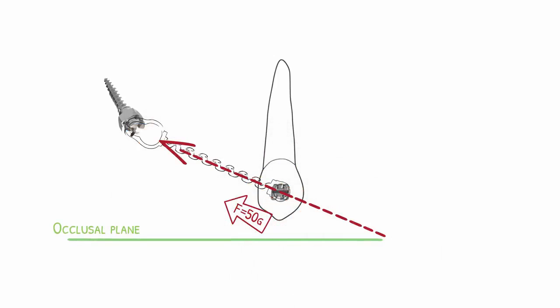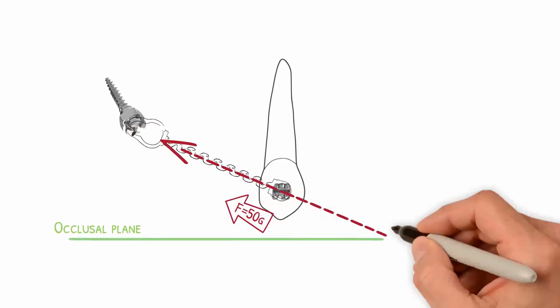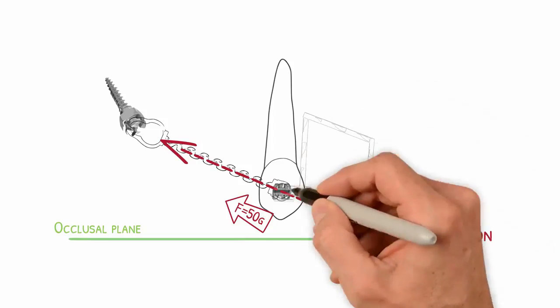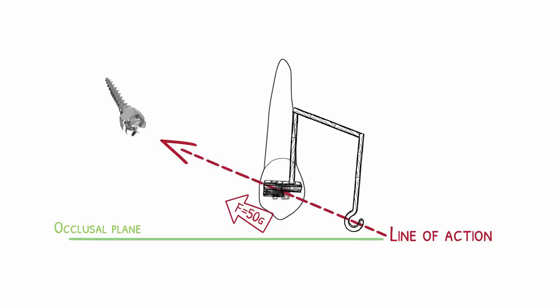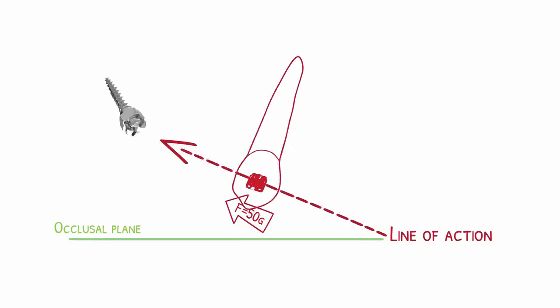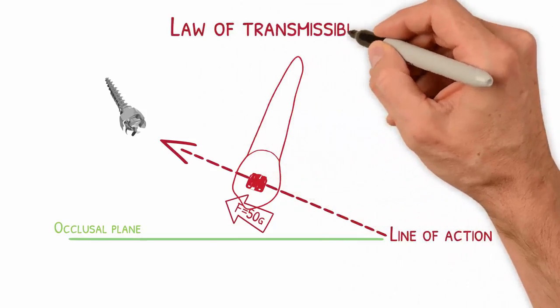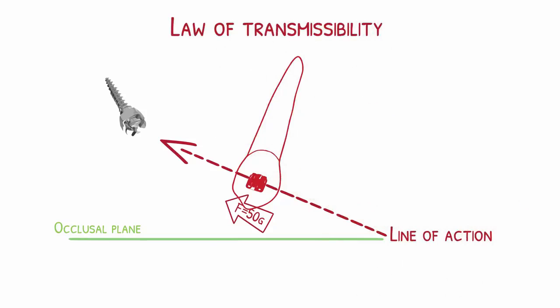Going further in our example, where we have already defined the desired line of action of force, you can apply your force at absolutely any point along that line, and the resulting movement will always be the same. That is, if instead of inserting your spring directly into the bracket, you decide to create an appliance configuration to apply the force at a point ahead the previous one, but in the same line of action, in both situations your movement will essentially be the same. This principle is called the law of transmissibility.